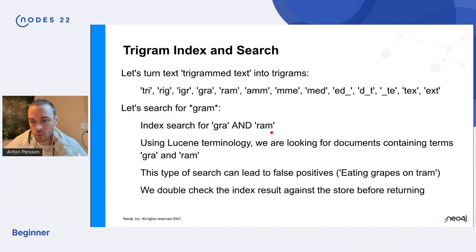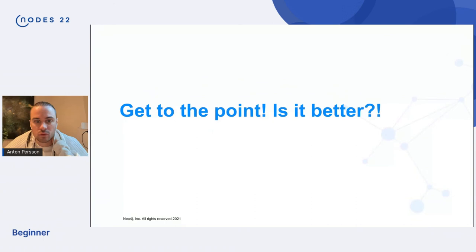And the index itself will give some false positives here, right? So for example, this string will also contain gra and ram, but it doesn't contain the entire substring gram. Right? So after we get the index result, we filter it through the store to verify the with the actual strings, not only the trigrams. And then we return the result to you as a user.